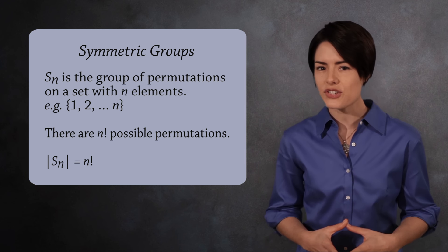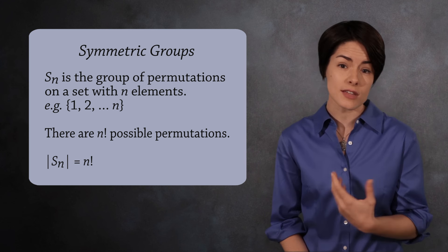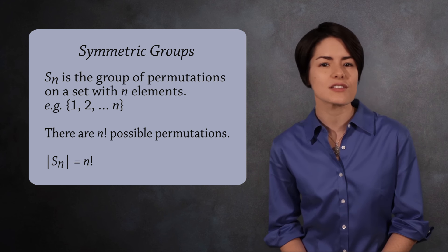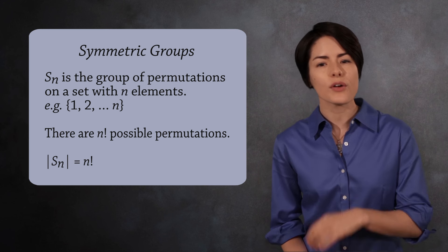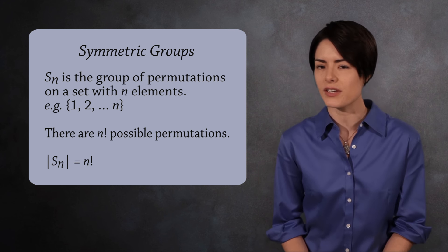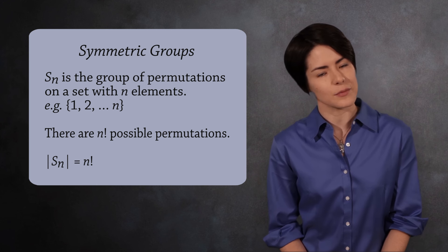The order of Sn is n factorial, and if you think of a permutation as a bijection from the set to itself, then the group operation is function composition. While you can write a permutation as a function, it's easier to write simply the inputs and outputs.